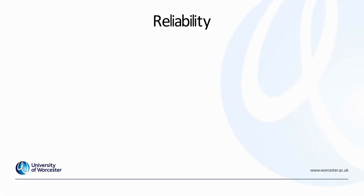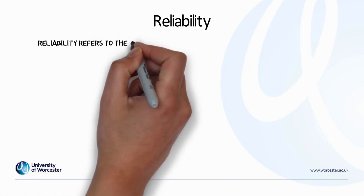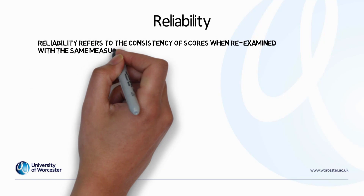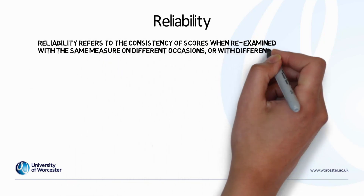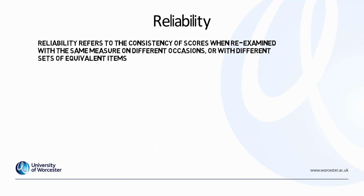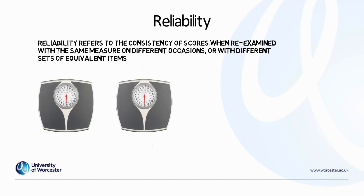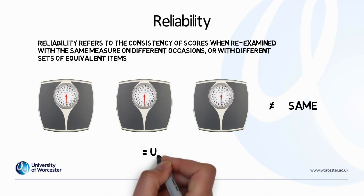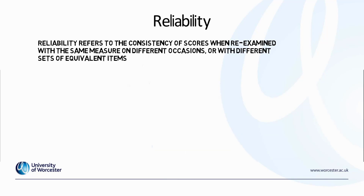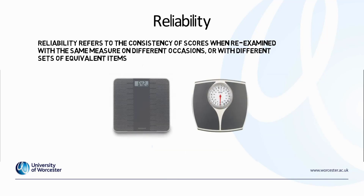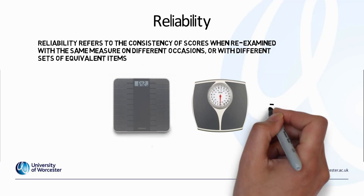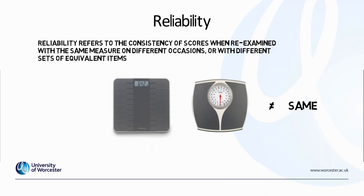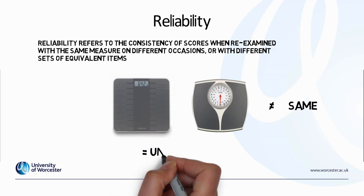To look at reliability in a little more detail, reliability refers to the consistency of scores when examined with the same measure on different occasions or with a different set of equivalent items. So if we were weighing someone and they stood on the same weighing scales three times and we got different results, our measurement would not be reliable. Similarly, if two different weighing scales providing equivalent items gave different weights, the score we were receiving would not be reliable.